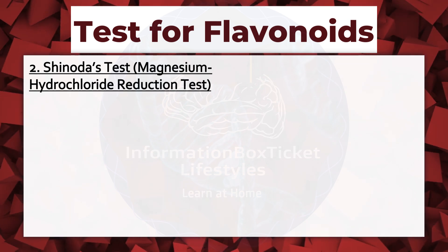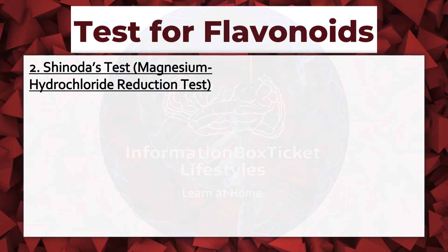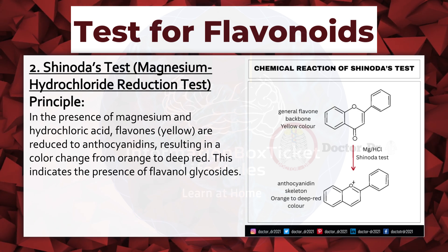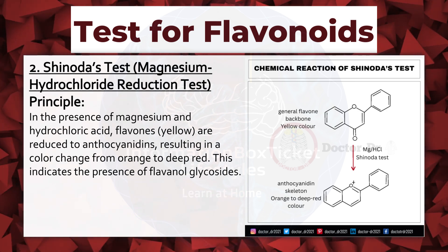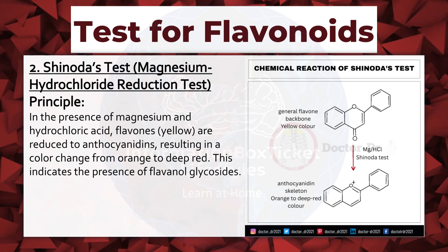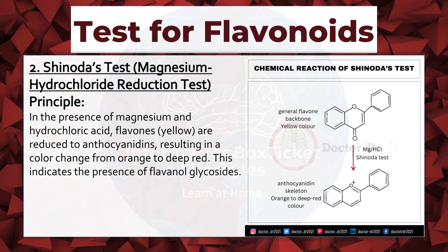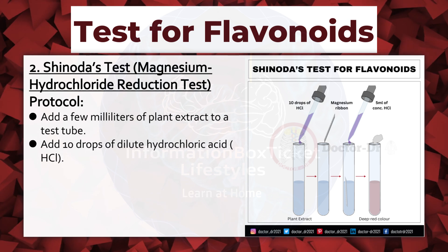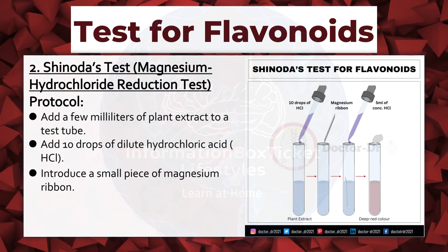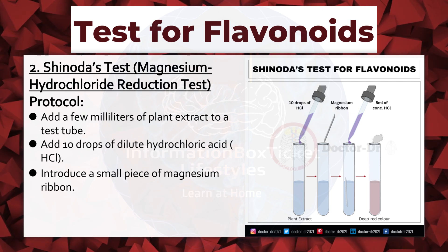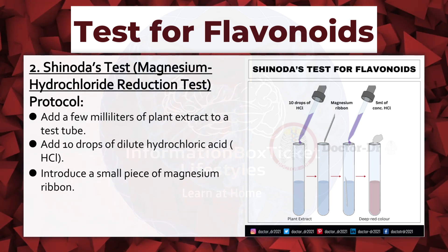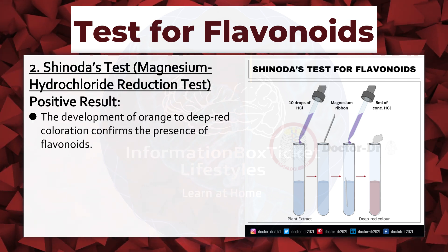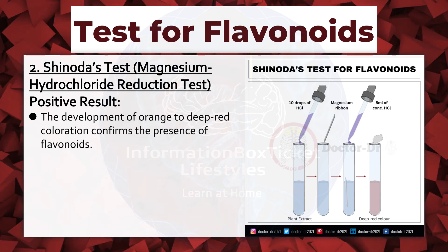Shinoda's Test (Magnesium-Hydrochloric Acid Reduction Test). Principle: in the presence of magnesium and hydrochloric acid, flavones are reduced to anthocyanidins, resulting in a color change from orange to deep red, indicating the presence of flavanol glycosides. Protocol: add a few ml of plant extract to a test tube, add 10 drops of dilute hydrochloric acid, introduce a small piece of magnesium ribbon, then add a few drops of concentrated hydrochloric acid to dissolve the magnesium. Positive result: development of orange to deep red coloration confirms the presence of flavonoids.